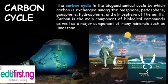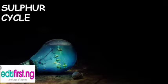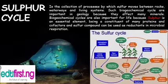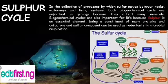Carbon is also a major component of many minerals such as limestone. Below is a diagram for the carbon cycle — you could study that and check all the materials for a broader understanding. The sulfur cycle is the collection of processes by which sulfur moves between rocks, waterways, and living systems. Such biogeochemical cycles are important in geology because they affect many minerals, and also important for life because sulfur is an essential element, being a constituent of many proteins and cofactors. Sulfur compounds can also be used as reductants in microbial respiration.